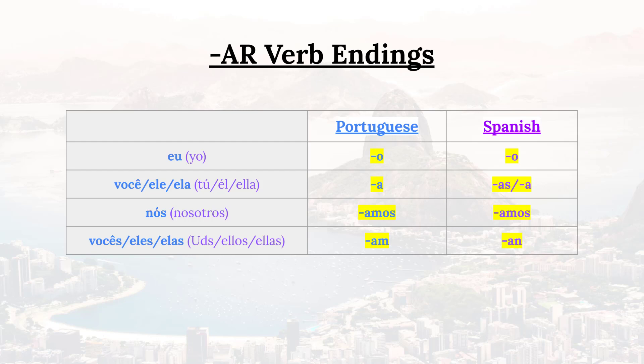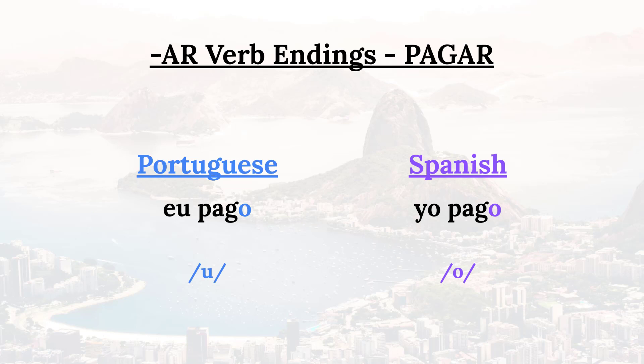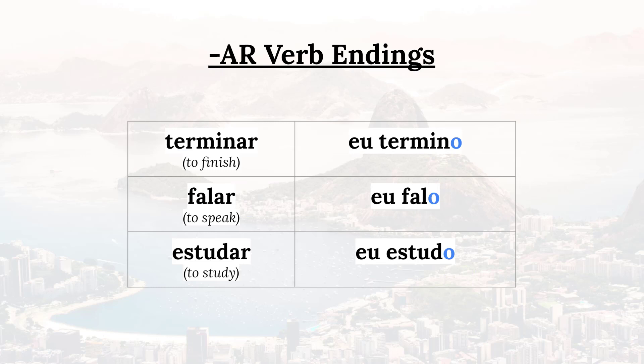Starting with the present tense verb endings for AR verbs, you can see just how similar they look on paper. What makes them different is how they're pronounced. Let's take the verb 'pagar' — to pay — as an example. In Spanish, 'I pay' is 'yo pago,' but in Portuguese it's 'eu pago,' where the O is pronounced with a 'oo' sound. So 'I finish' would be 'eu termino,' 'I speak' is 'eu falo,' 'I study' is 'eu estudo.'